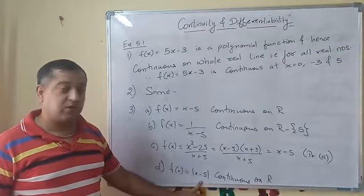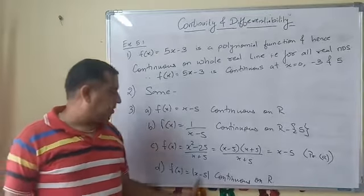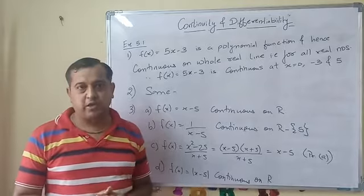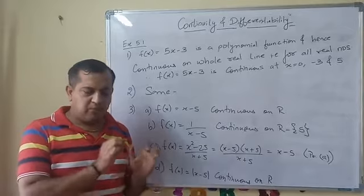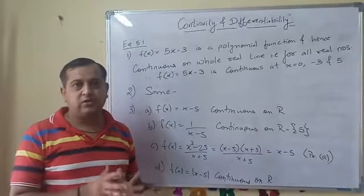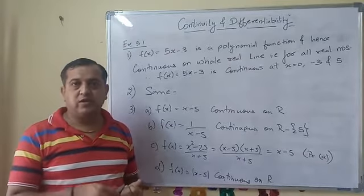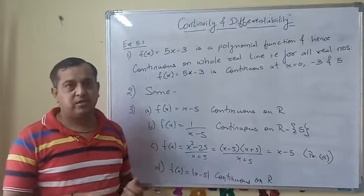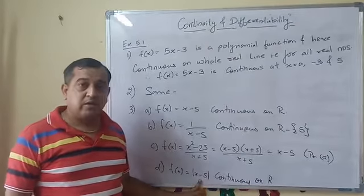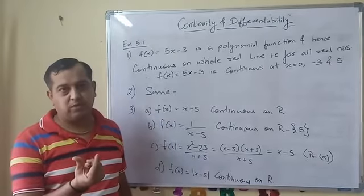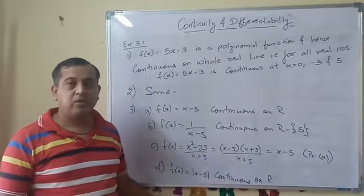And f(x) = |x - 5|, modulus function. Here you can say that theorem 2 is used. Theorem 2 states that if f and g are two functions such that we can find the composite function at point c, if g is continuous at point c and f is continuous at point g(c), then the composite function is continuous at point c. This is a composite function - modulus and linear x - 5, their combination. Linear function is continuous at 5, modulus function is continuous at 5, so this will be continuous on the whole real line.